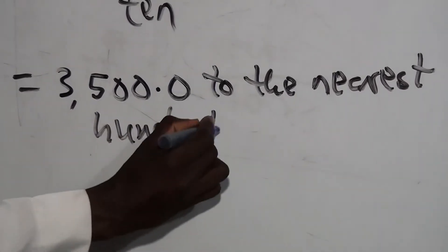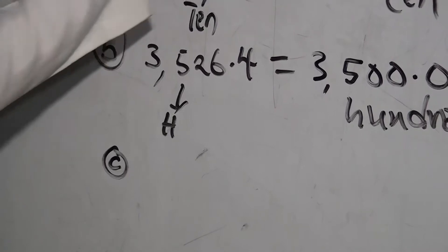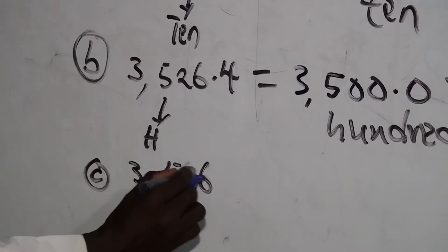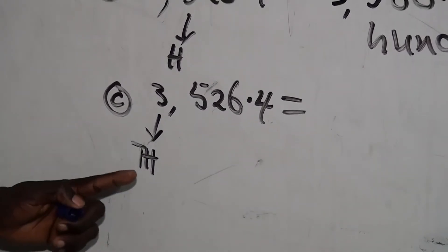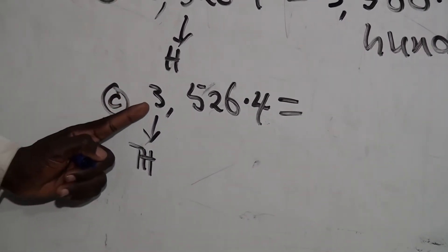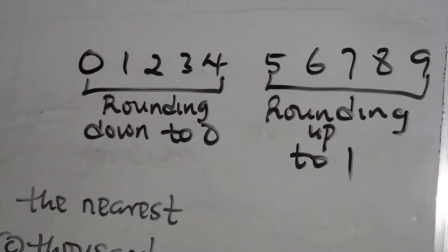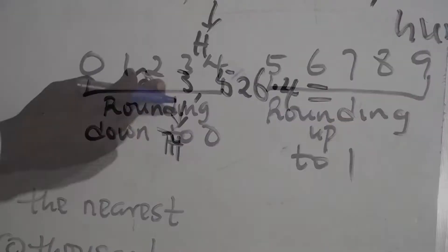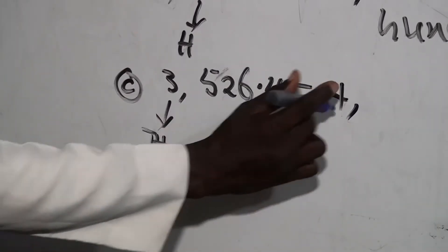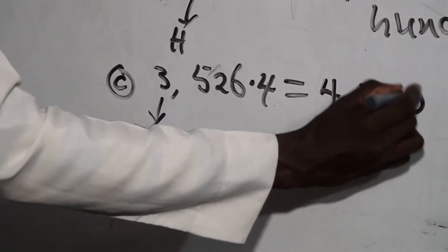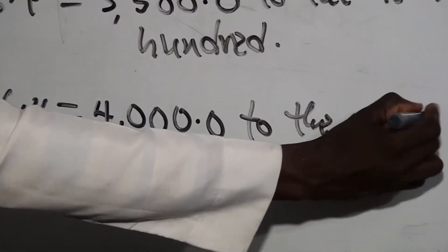Now the last one: to the nearest thousand. Repeat the number — 3526.4. The thousands place is identified; the digit after it is 5. Looking at our chart, 5 rounds up to one. Add that one to 3 to get 4. All digits after become zero. So the answer is 4000.0 to the nearest thousand.